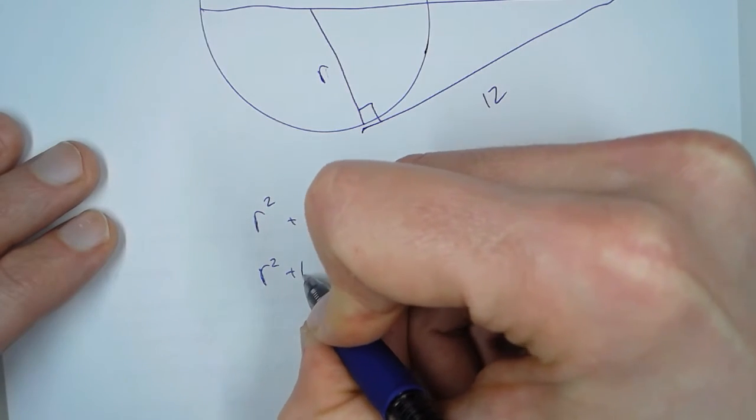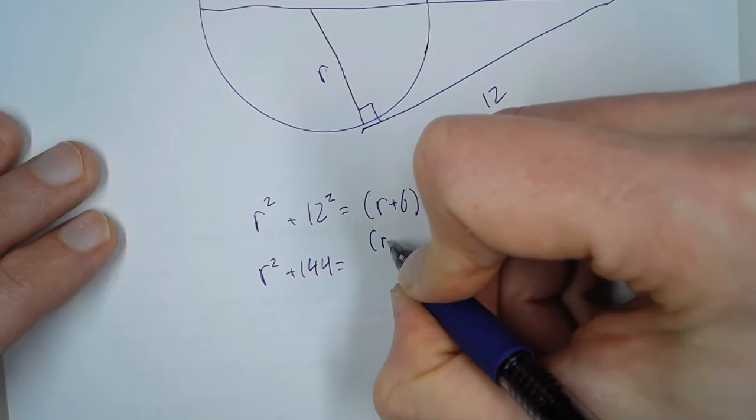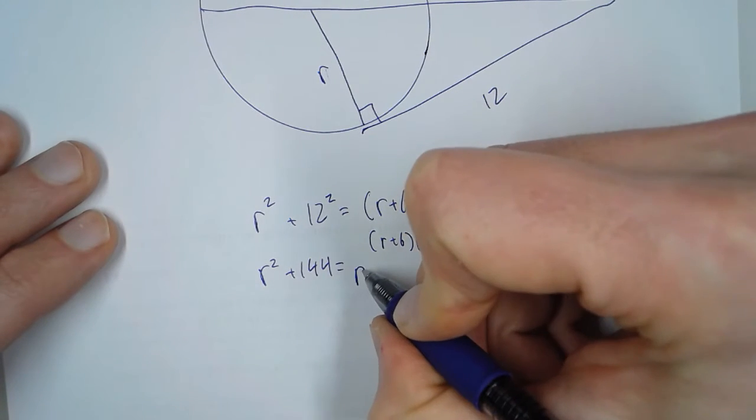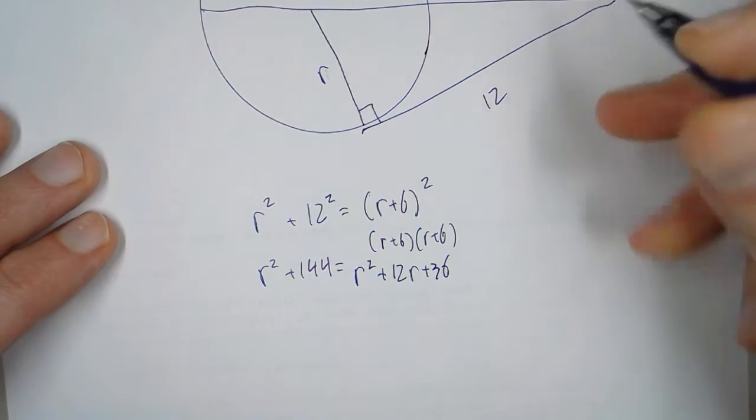So R squared plus 144. We have to distribute this: R plus 6 times R plus 6, so we get R squared plus 12R plus 36.